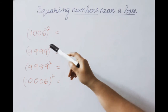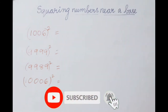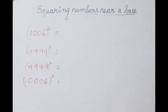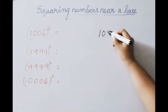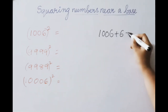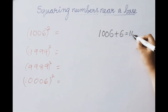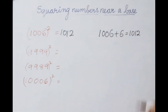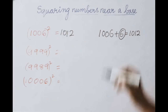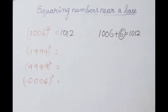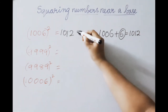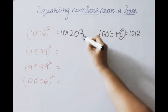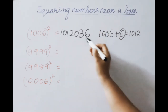Next example: 1006 squared. Base is 1000. Excess value is 6. Add: 1006 plus 6 equals 1012 — first part answer. 6 squared equals 36. Base 1000 means 3 digits allowed, so write 036. Therefore 1006 squared equals 1012036.